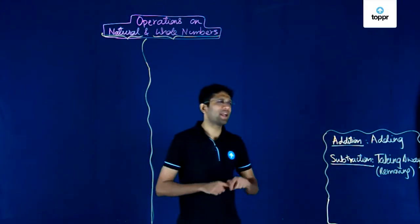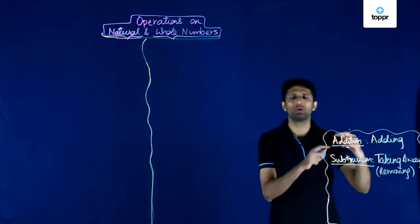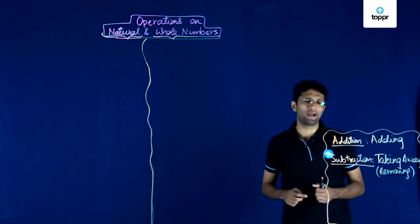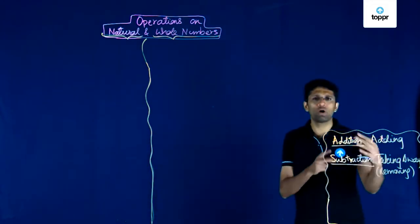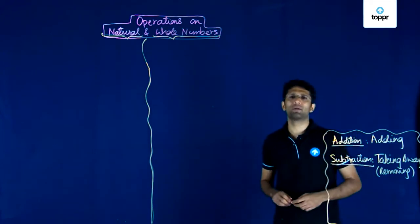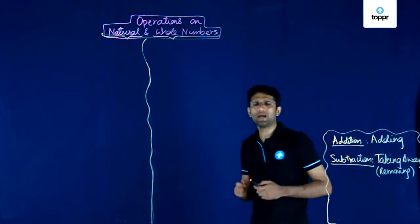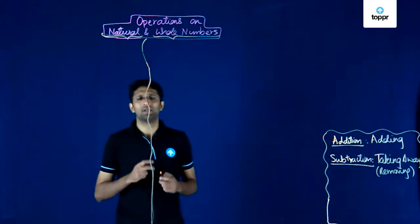We have seen that addition is adding a given number to a different number, and subtraction is taking away or removing something from that given number. Let us now look at another interesting example.